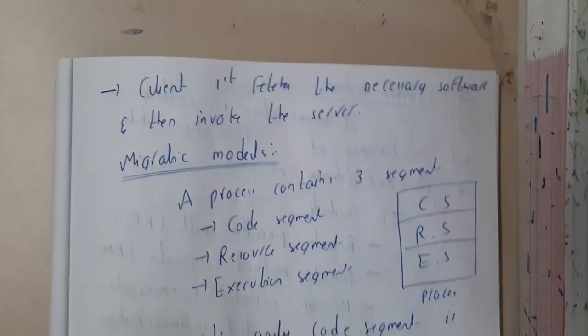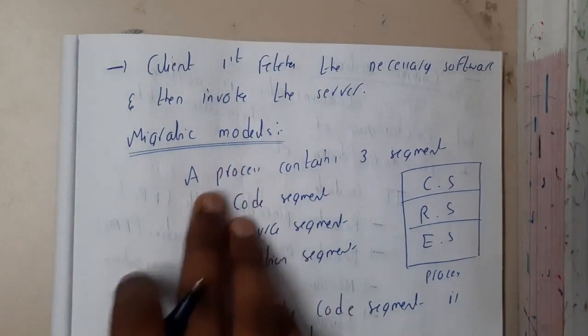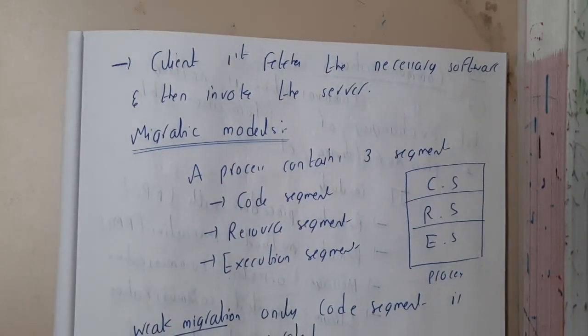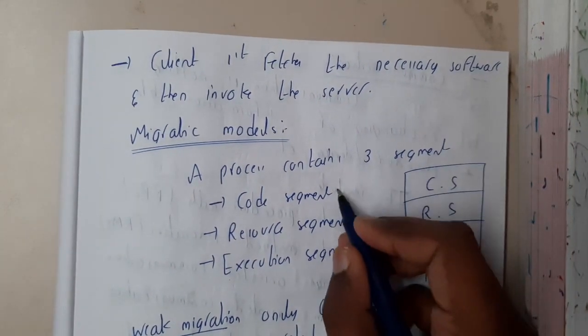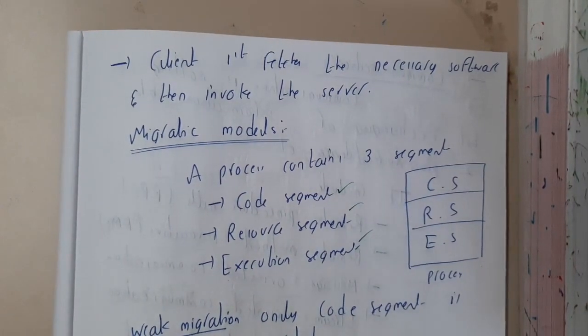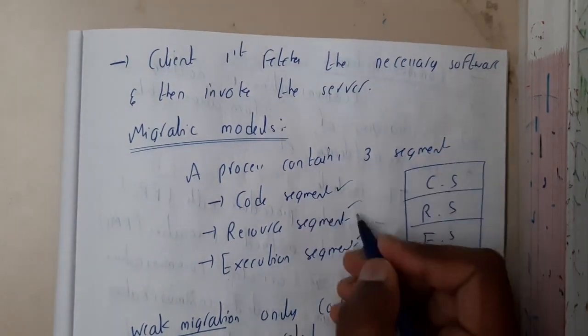Similarly, migrating models. We have a few migrating models. Each contains three segments: code segment, resource segment, and execution segment. Code segment is where the exact code is, resource segment is where resources like variables are stored.